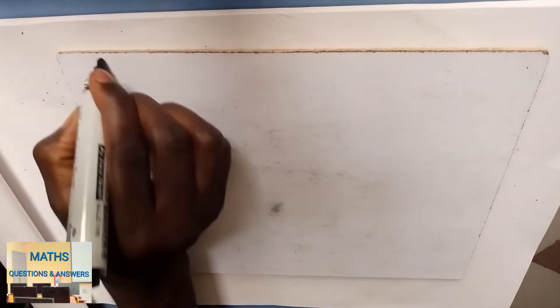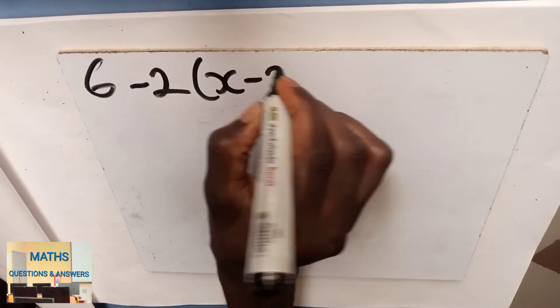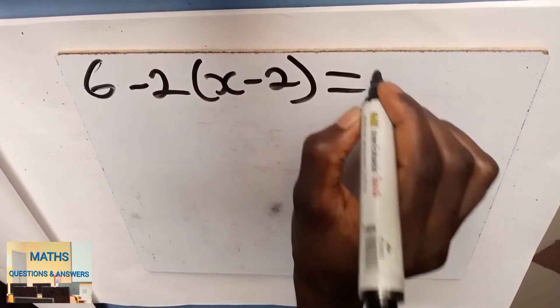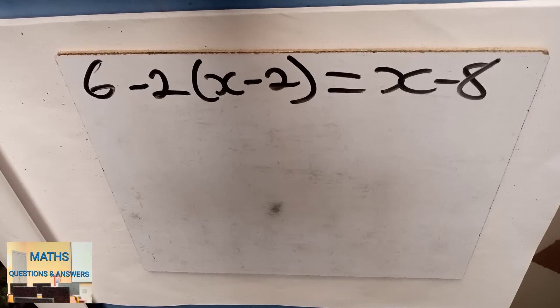What is the truth set of 6 minus 2 multiplying x minus 2 equal to x minus 8? Solve first before continuing the video. So pause the video and solve.